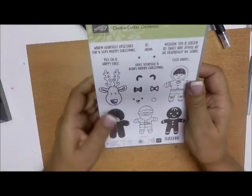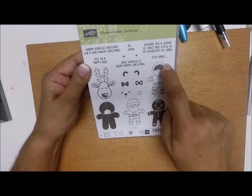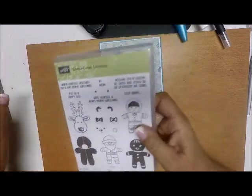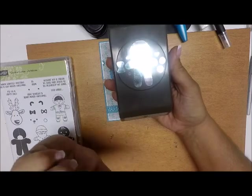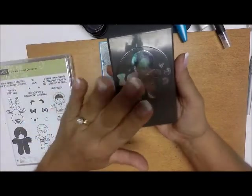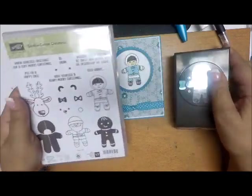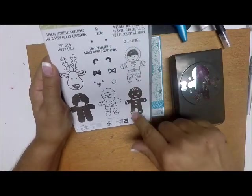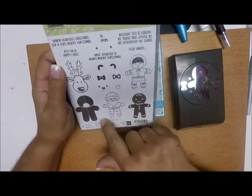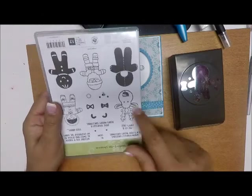We're using the cookie cutter Christmas stamp set with this little Eskimo, and it comes with the cookie cutter punch that will cut out the Eskimo, the gingerbread man, the Santa, the teddy bear, and if you flip this reindeer upside down you'll see that it'll cut him out as well.